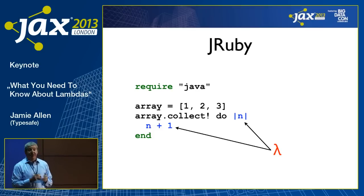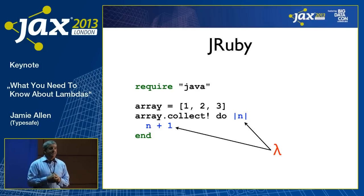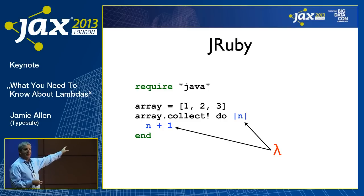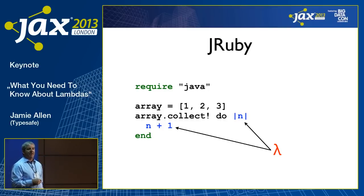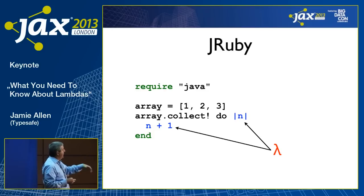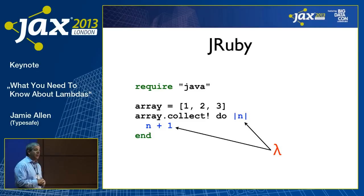JRuby. It's great that you can take Ruby code, put 'require Java' at the top, and now you've got fully functional Ruby on the JVM. The way they write code to create the list and perform the transformation is very simple to understand.